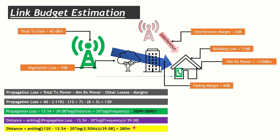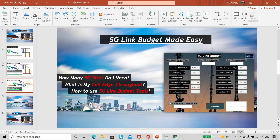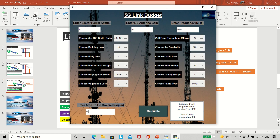Once we have the cell edge distance of 280 meters, we know the area we need to cover. We convert the cell range into a hexagonal cell area and divide the total area by that to get the number of sites needed. That is how link budget lets us find our cell edge. Now let's go back to the tool and look at different iterations and functionalities.